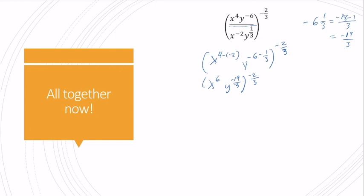I'm going to go ahead and distribute this before I turn this y into a fraction in the denominator. So, that gives me x to the 6th times negative 2 thirds. y to the negative 19 thirds times negative 2 thirds. So, that gives me x to the negative 12 thirds. y to the negative 2 thirds. That gives me 38. 3 times 3 gives me 9.